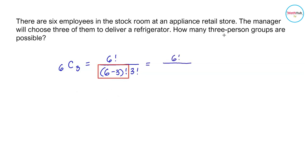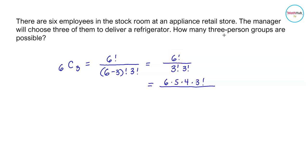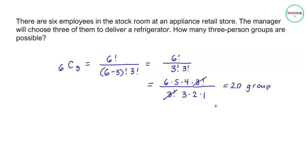Using the combination formula: C(6, 3) = 6! / (3! × 3!). We rewrite 6! as 6 × 5 × 4 × 3!, cancel 3! in the numerator and denominator, and write the remaining 3! as 3 × 2 × 1. Multiplying 6 × 5 × 4 and dividing by 3 × 2 × 1 gives 20. Therefore, there are 20 possible three-person groups to deliver the refrigerator.